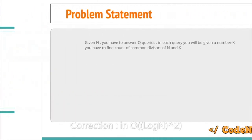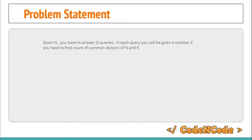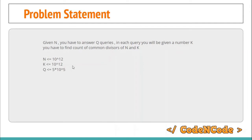First it is important to understand the actual question, because it is not like for each given two integers you can calculate their common number of divisors in log N time — this is specific to this problem. You are given an integer N and also Q queries; each query gives you an integer K, so you have to count the total number of common divisors of N and K. N doesn't change, only K changes. Q can be as large as 5×10^5 and N, K can be as large as 10^12. The expected time complexity should be O(log N).